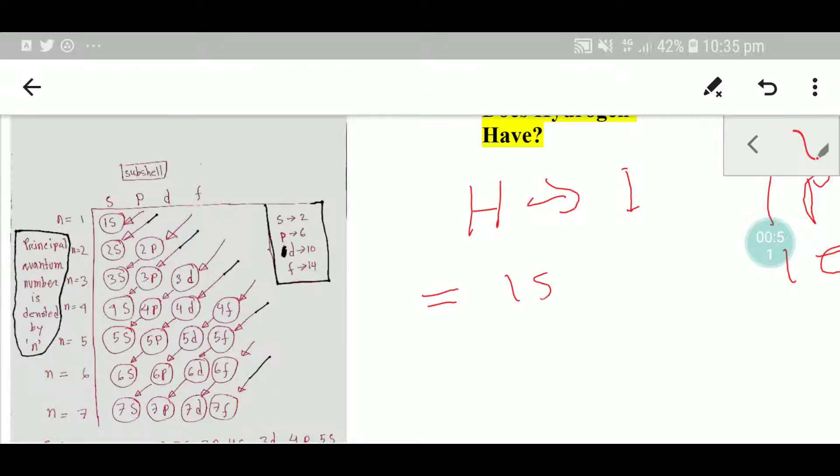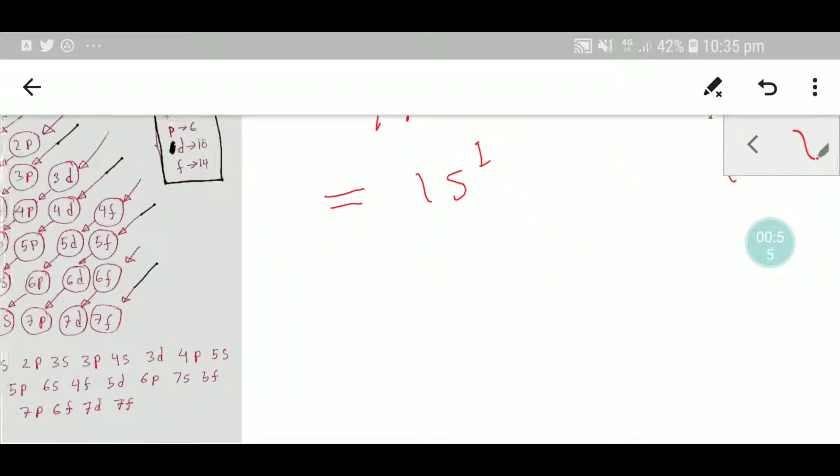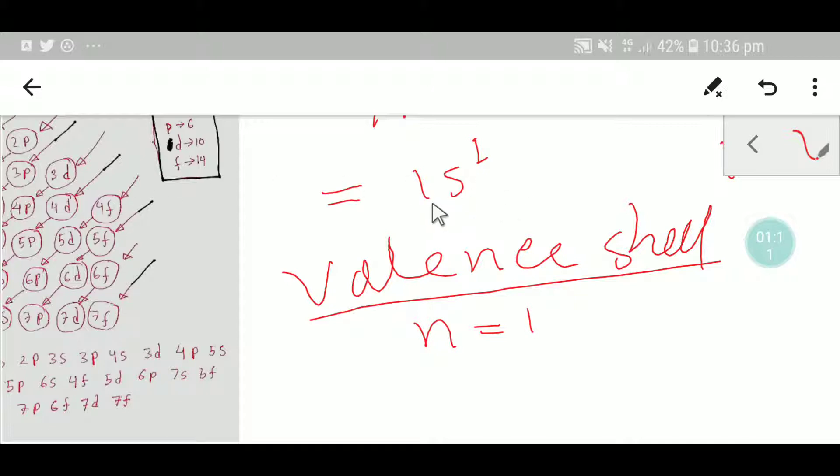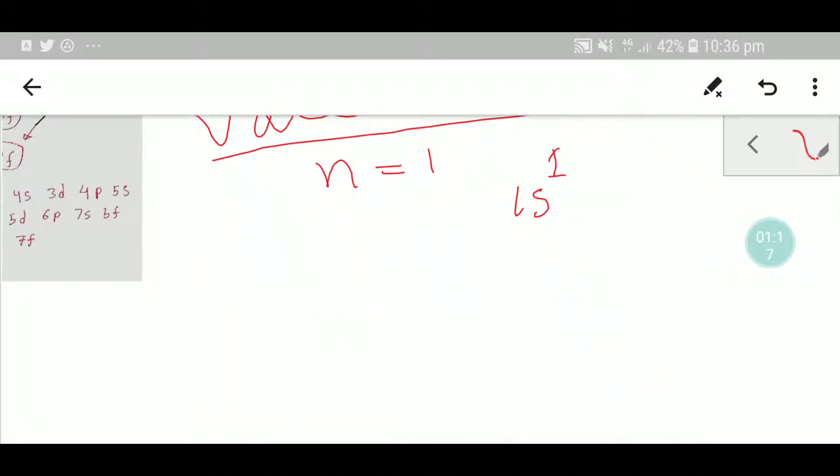Now we have to find out the valency shell. You can find the valency shell by the value of principal quantum number. Here the principal quantum number is one. That's why 1s1 is the valency shell, and the electrons of valency shell are called valency electrons.